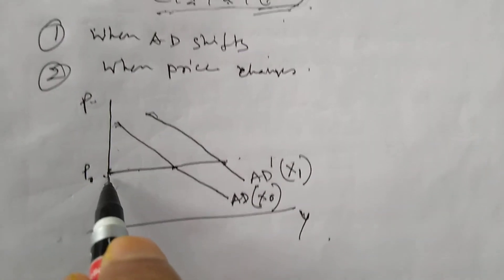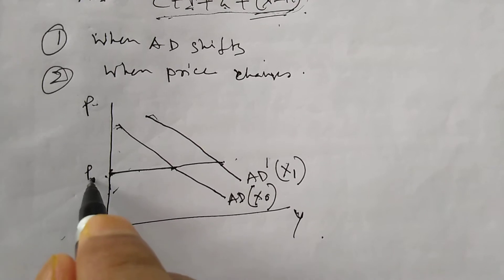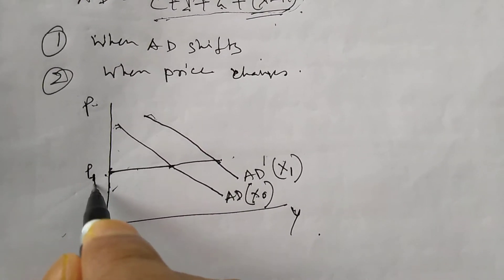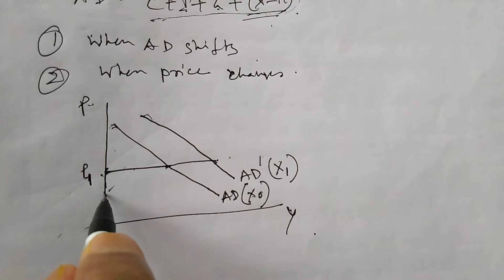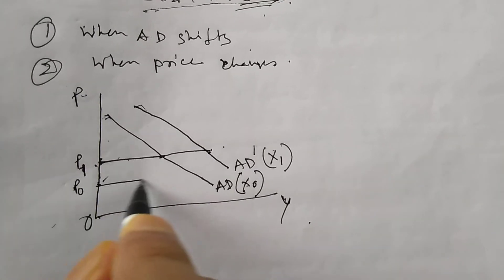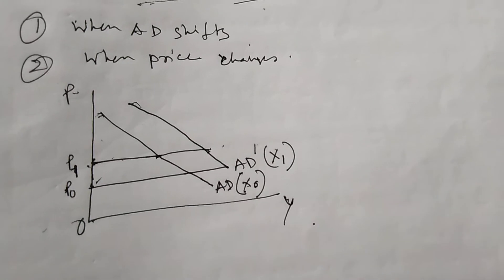Another situation is: if price falls, say from P1 to P0, then what will be the change in income? So these two situations we will discuss using the Keynesian cross to analyze the expenditure multiplier.